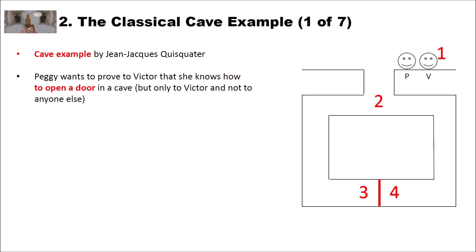Now let's have a look at the classical cave example, which was invented by Jean-Jacques Quisquater. Peggy wants to prove to Victor that she knows how to open a door in a cave, but only to Victor and not to anyone else. On the right side we have our setup: a cave with a door in the middle. Peggy claims that she has the secret — maybe a key — to open the door, and she wants to prove it to Victor.